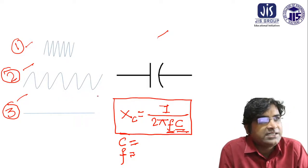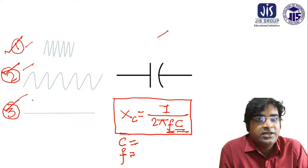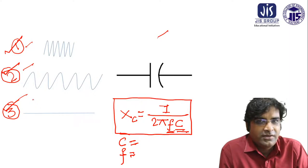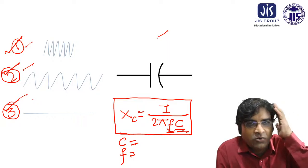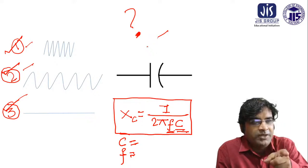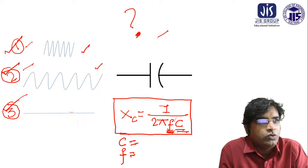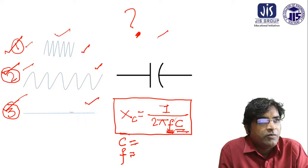Now, there are three signals: signal one, signal two, and signal three. For these three particular signals, the passing capability through this capacitance — which one is higher? Think about it, storm your brain. You go through the f term — f is the frequency. Try to find out the frequency of signal one, signal two, and signal three. The frequency is highest in signal three, lower in signal two, and here the frequency is zero in signal one.